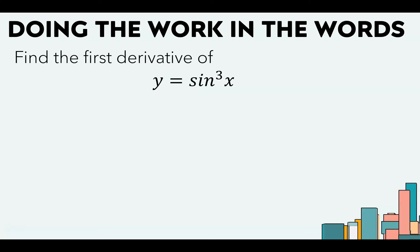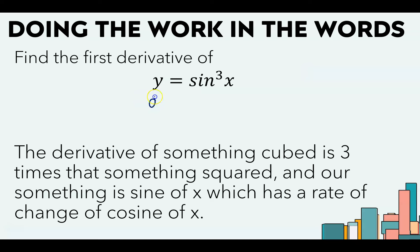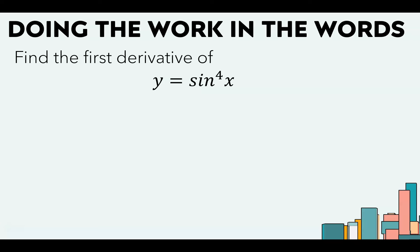The derivative of sine cubed x — hopefully you recognize this is the same thing as sine of x all raised to the third power. So we're taking the derivative of something cubed. The derivative of something cubed is 3 times that same something squared. Our something is sine of x, which has a rate of change of cosine of x. For the next one: which is the outermost — sine or the fourth power? The fourth power is. The derivative of something to the fourth power is 4 times that same something cubed. That something is sine of x, which has a rate of change of cosine of x.